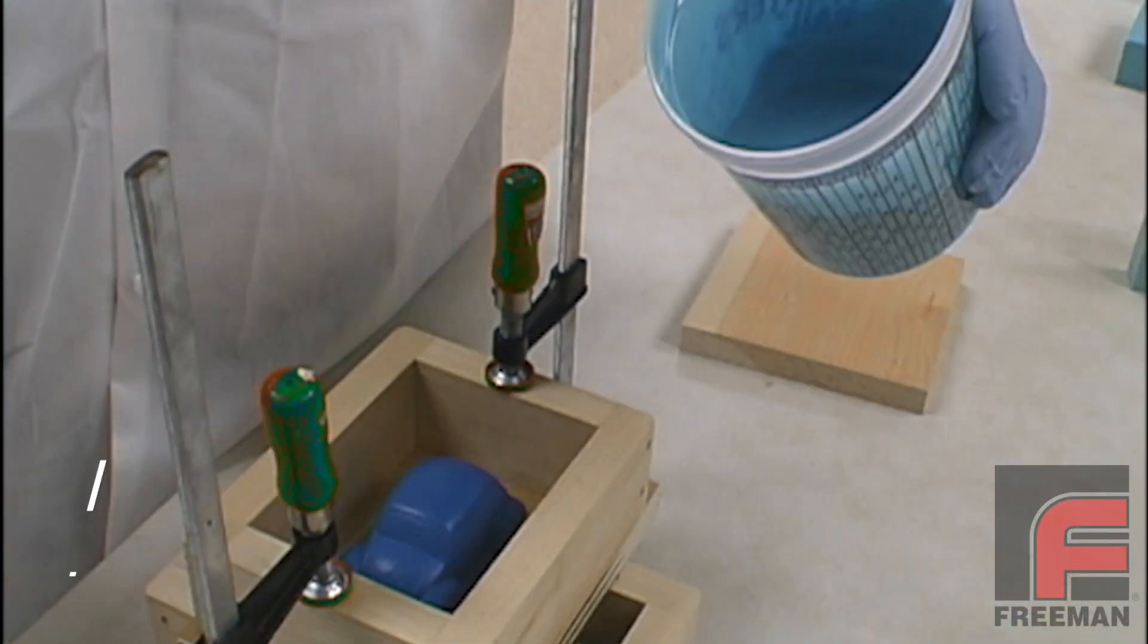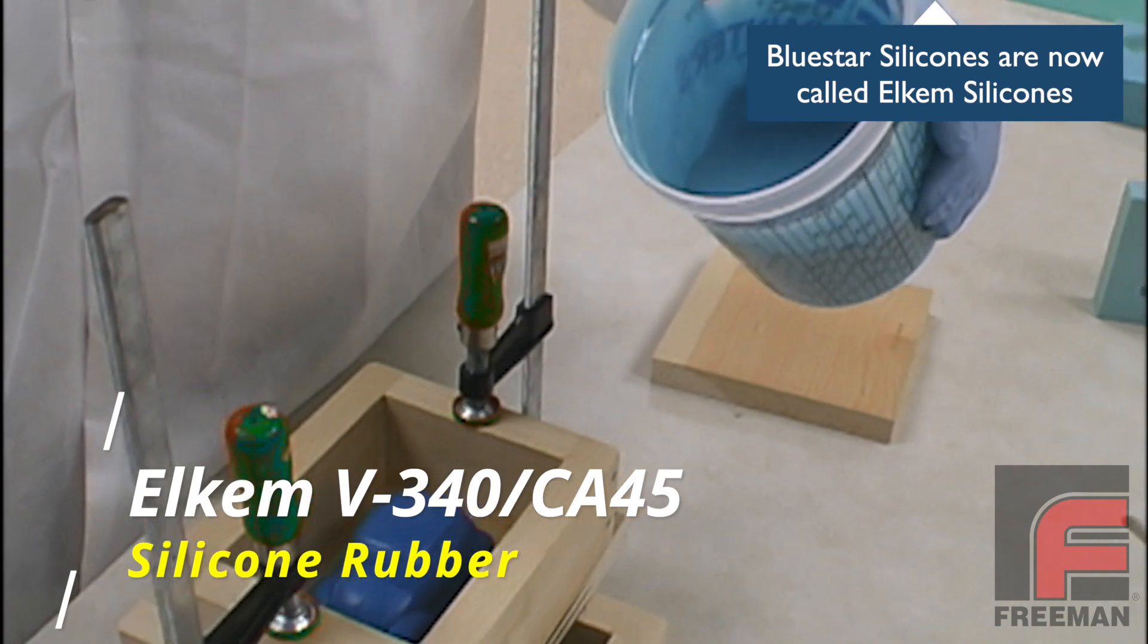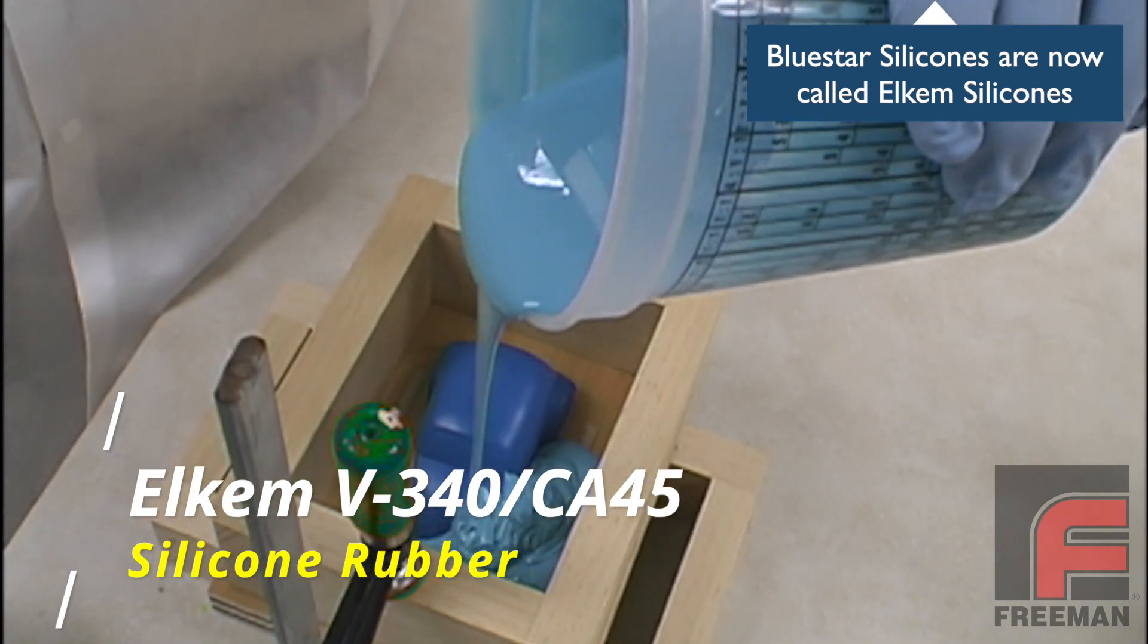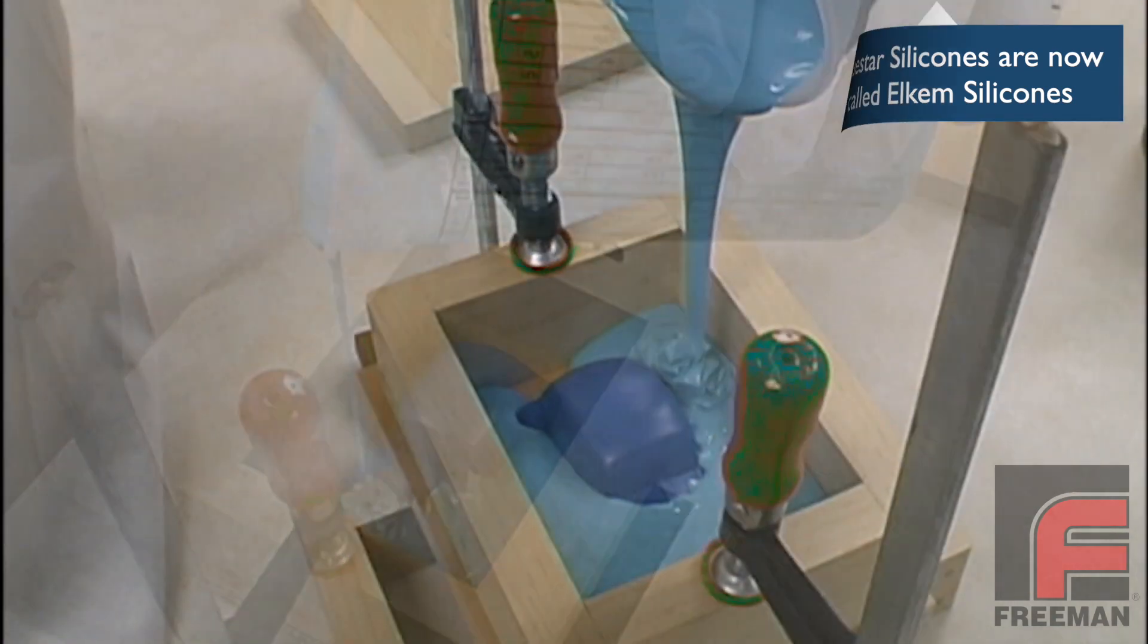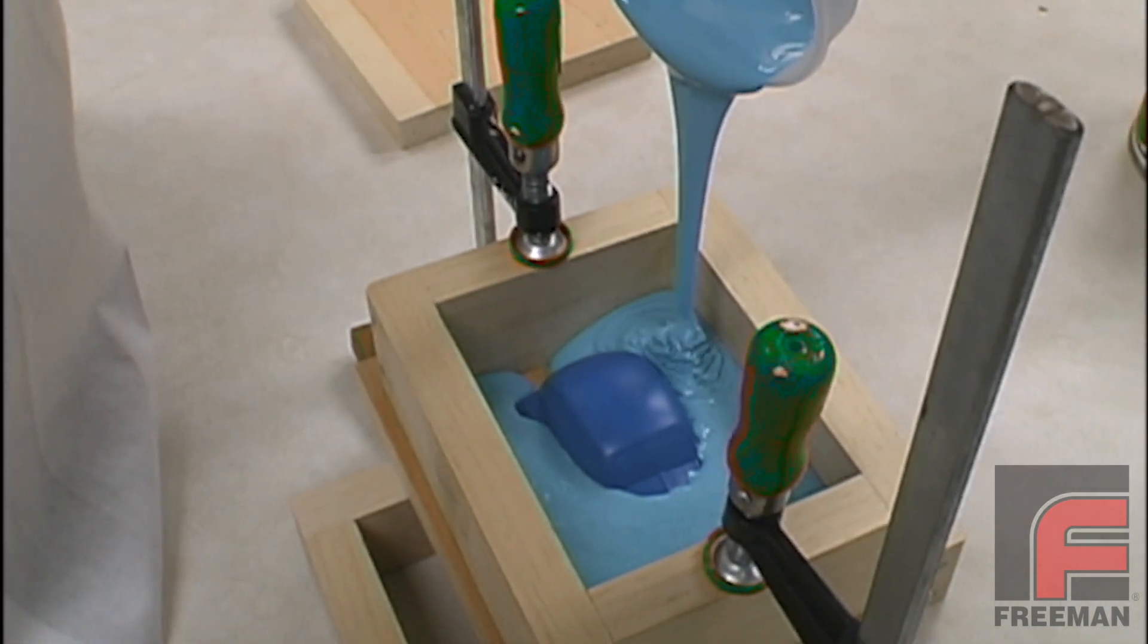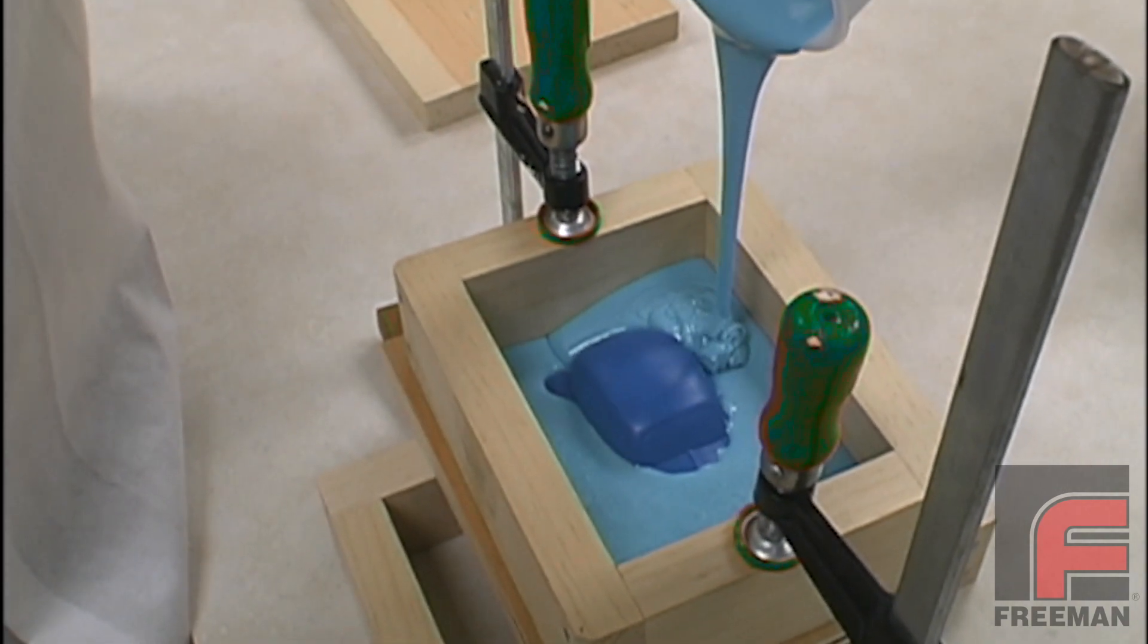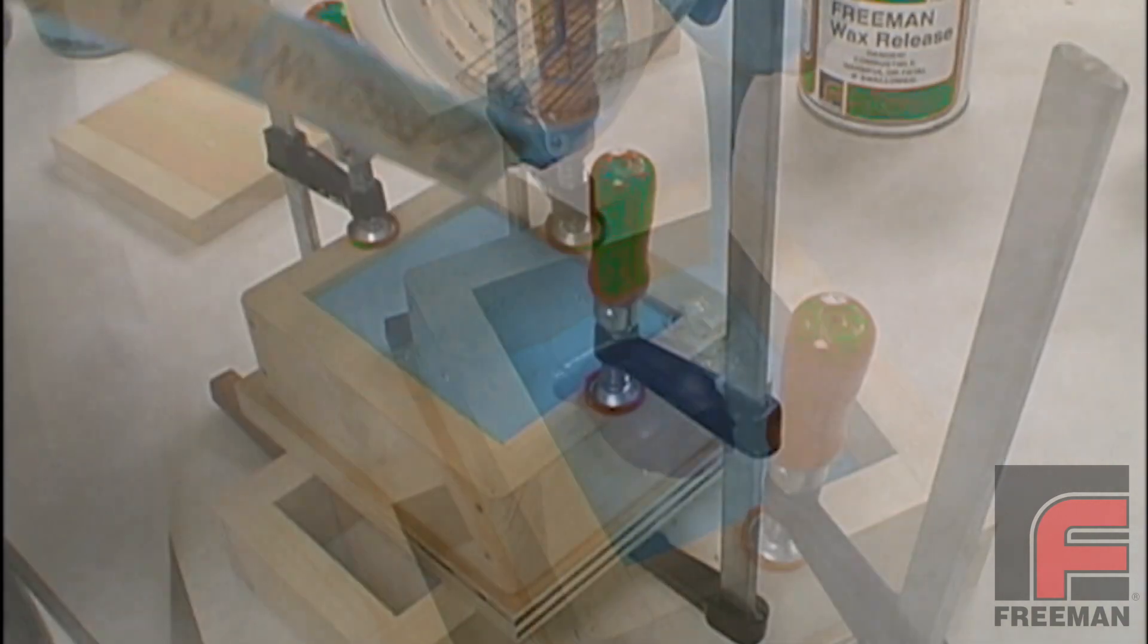We are using Bluestar's V340 silicone rubber, which has already been properly weighed, mixed, and vacuumed to degas. Please refer to our other videos which detail this process. This material requires 16-18 hours to solidify, so we need to wait until the next day to create the second half of our mold.